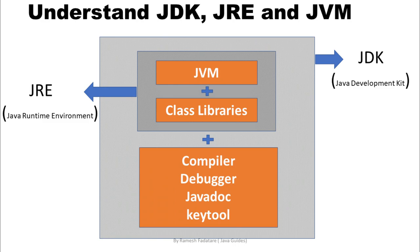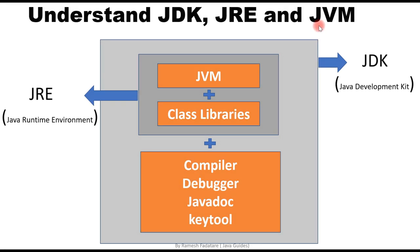Now let's talk about JVM. JVM is the heart of the Java programming language. When we execute a Java program, JVM is responsible for converting bytecode into machine-specific code. JVM is platform dependent and provides core Java functions such as memory management, garbage collection, security, etc. We can also customize the JVM as per our requirement, like allocating minimum and maximum memory to it. JVM is called an abstract virtual machine because it provides an interface that does not depend on the underlying operating system and machine hardware.